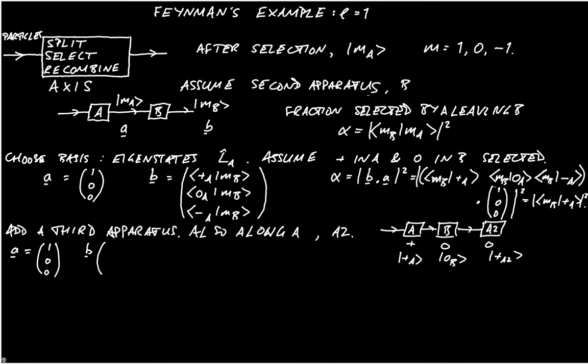Little b is going to be equal to plus A, zero B, zero A, zero B, and minus A, zero B. Let's close off the kets there, extend this bracket down, and close that bracket. Let's just tidy that up.